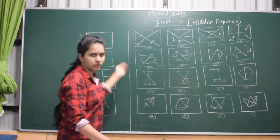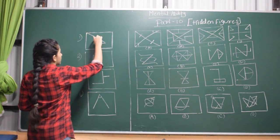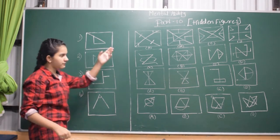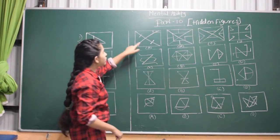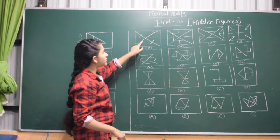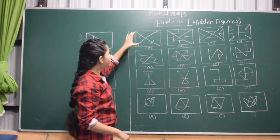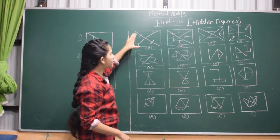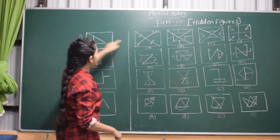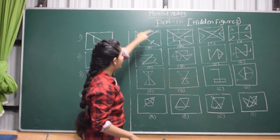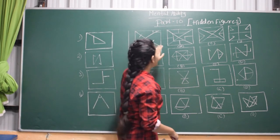Let's go to the first question. This is the question figure. Let's see which of the options has the answer figure hidden. If you go to the first option, as you see, there is so much blank space, and this figure is not seen here because there is no big triangle in this question. So it's not hidden in this figure.